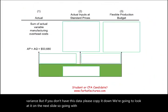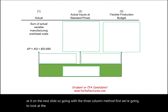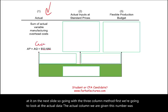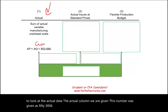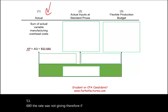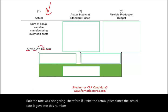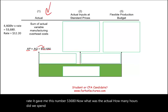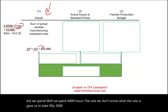Going with the three-column method, first we look at the actual column. We are given that the actual variable overhead cost was $53,680. I can compute the rate: taking actual price times actual hours gives me $53,680. We spent 4,400 hours. We don't know what the actual rate is, but if we solve for it — $53,680 divided by 4,400 — the actual overhead rate is $12.20.